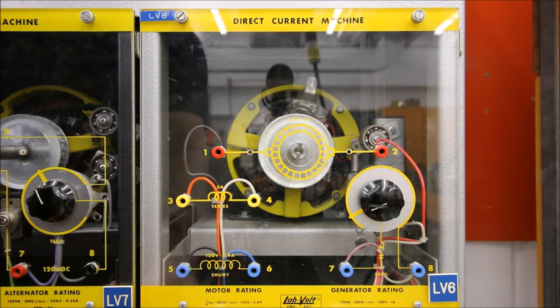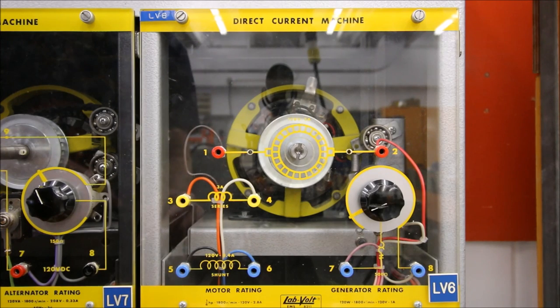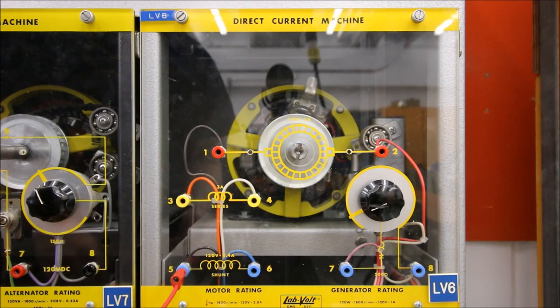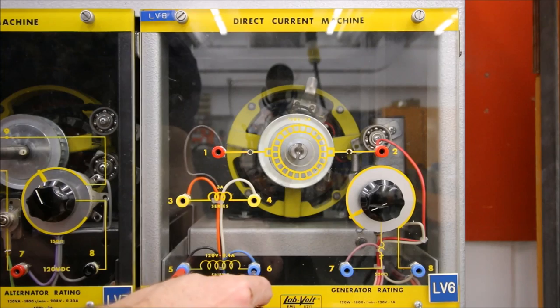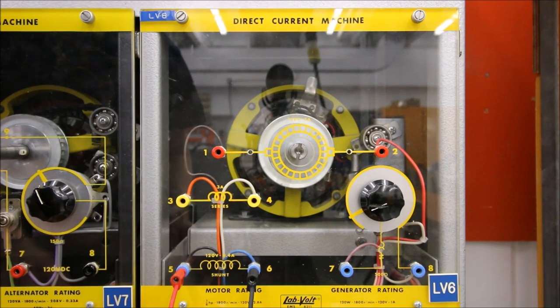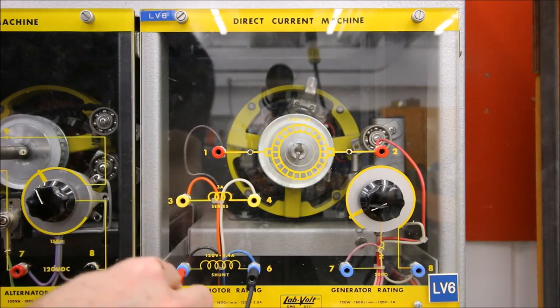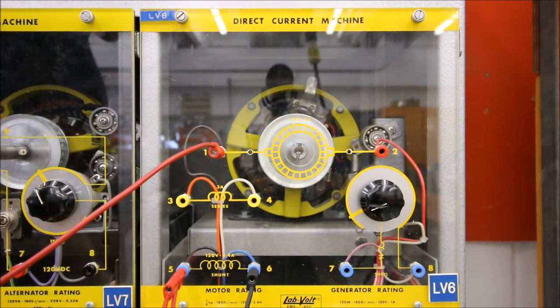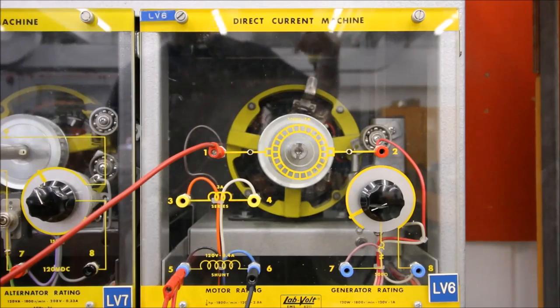Okay, so let's do the shunt motor. So the shunt is, we have the positive, and I'm going to go positive to the shunt being F1. I'm going to go negative to my F2. And then from there, I'm going to jumper up to my armature. So the armature is in parallel. Shunt essentially means parallel.